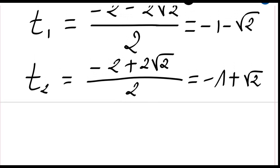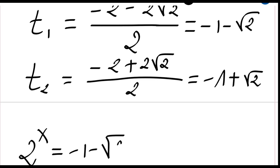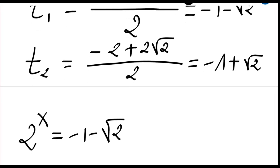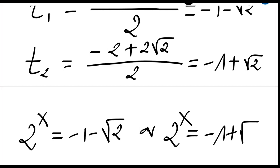This implies that we either have — replacing the value of t, where t was 2 to the power x — 2 to the power x equal to minus 1 minus the square root of 2, or the second value: 2 to the power x equal to minus 1 plus the square root of 2.